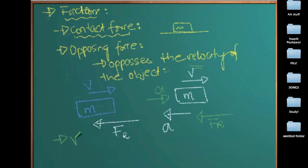Also, friction force is a viscous force. A viscous force means that it produces heat whenever the friction force is acting. You can see this example: if you just rub your hand on the table and slide it, you will feel your hand getting hot. That is because the friction force is generating heat. Any force that generates heat is a viscous force, and friction force is a viscous force.